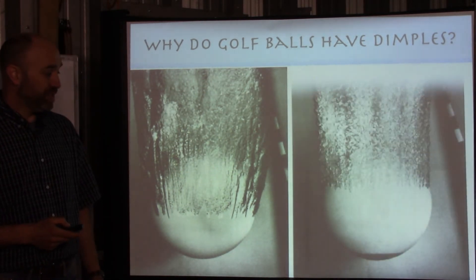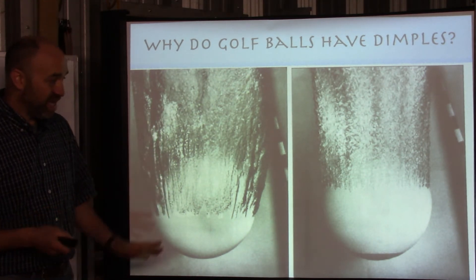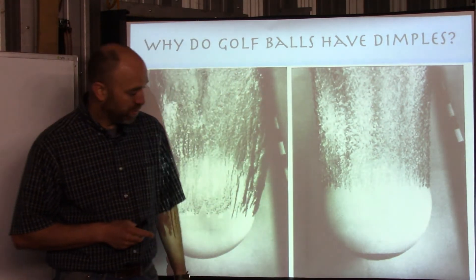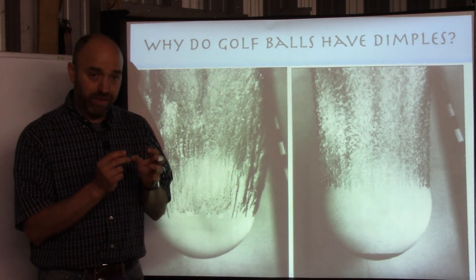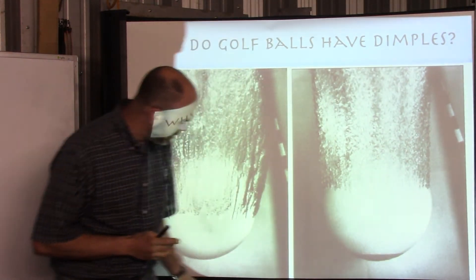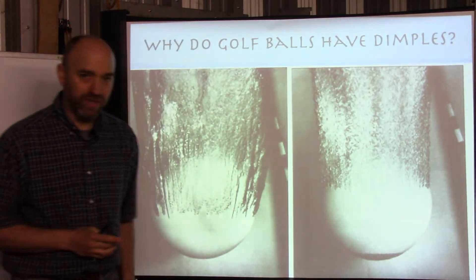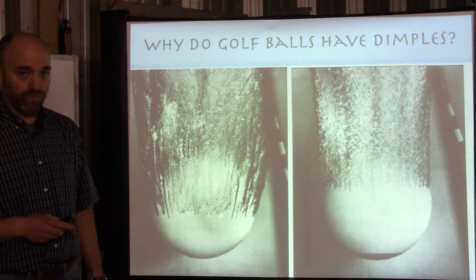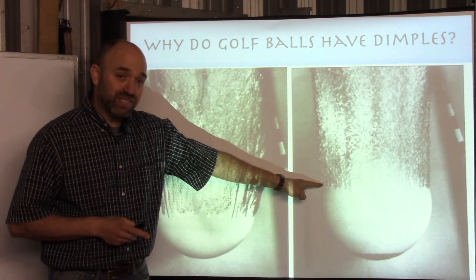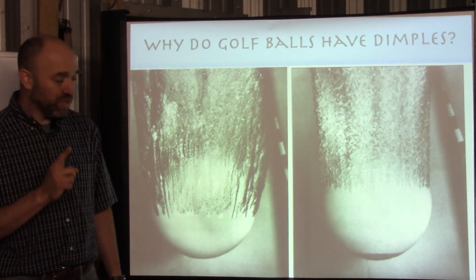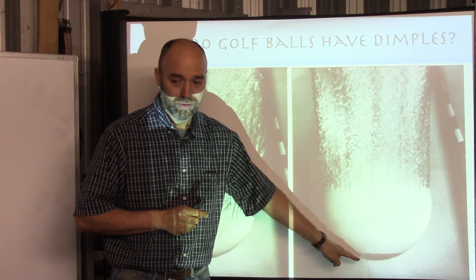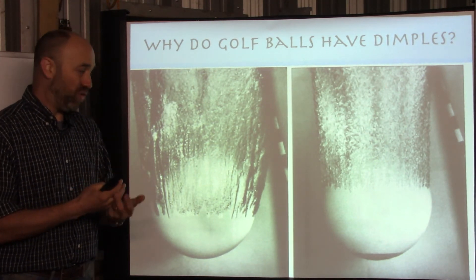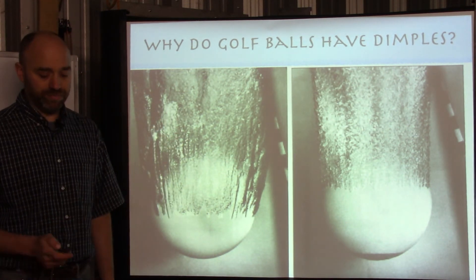Here's the same ball in the same fluid flow, but with one difference: they painted some sand on just the front part to make it a little rough. And what that did is drastically change where the turbulence formed. This ball with the rough front has significantly less turbulence than the smooth one - and the only difference is the roughness at the front. This is not intuitive at all; the only reason we know this is because we measure it.